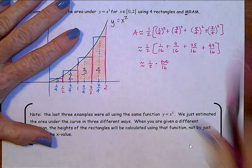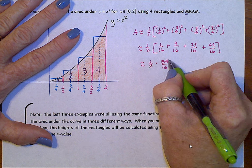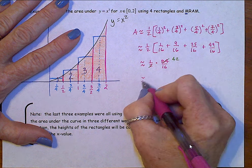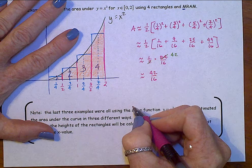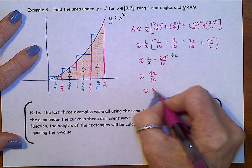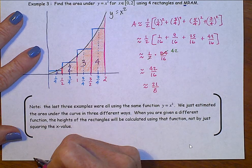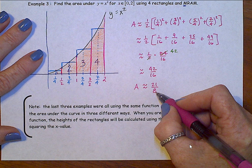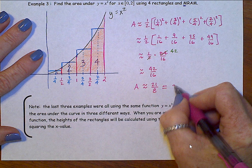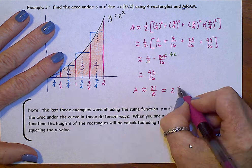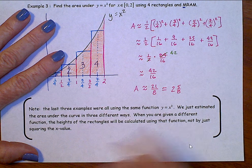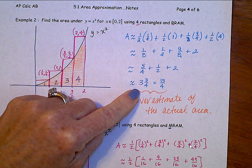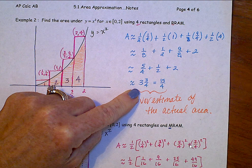And we could cancel out here, or cross cancel. Two goes into 84, 42 times. And we'll have 42 over 16, which we can divide out by two, which is 21 eighths. There's an approximate area, and if we change that back to a mixed number, that is going to be two and five eighths. And if you'll notice, two and five eighths is between three and three fourths from the RRAM and one and three quarters for the LRAM. Two and five eighths is somewhere in between.